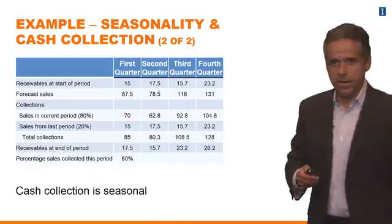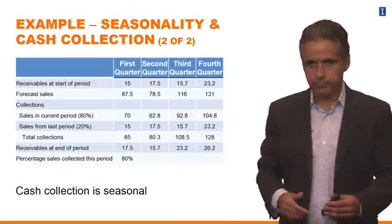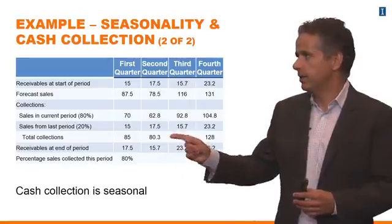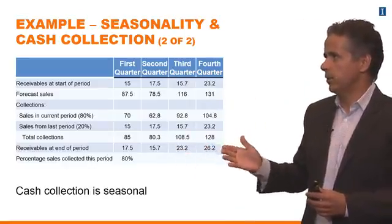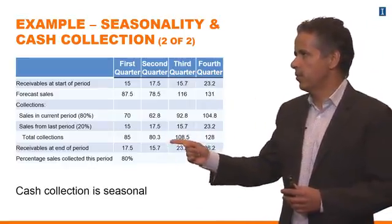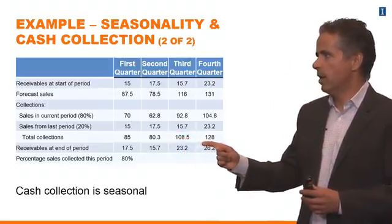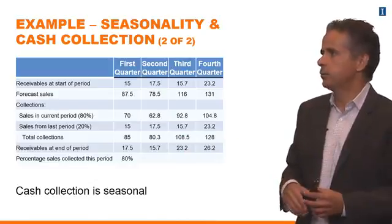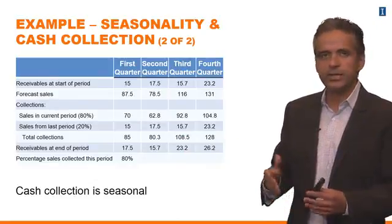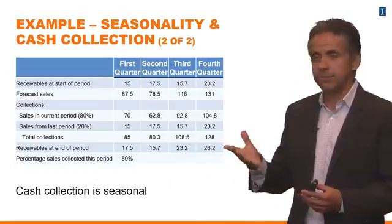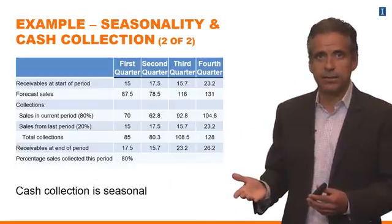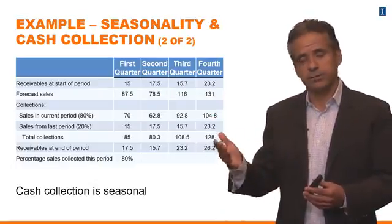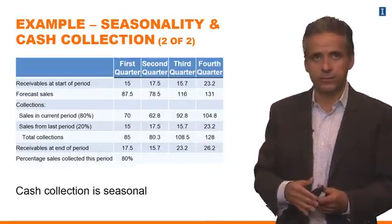Here you have the answer with all the numbers plugged in for all four quarters. You collect $80.3 million in the second quarter, $108.5 million in the third quarter, and then $128 million in the fourth quarter. So you can see that cash collection becomes seasonal as well. Because your sales are seasonal, you're going to collect more cash in the fourth quarter than in the first quarter.